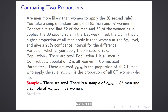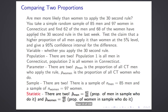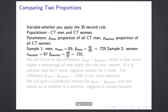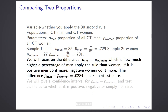We have two different samples — 85 men and 97 women — and therefore two statistics: the sample proportion for men and the sample proportion for women. We're going to focus on the single parameter which is the difference: p_men minus p_women. You can view that as how much higher the percentage of men who apply the rule is than women. The more difference there is, the bigger that number.